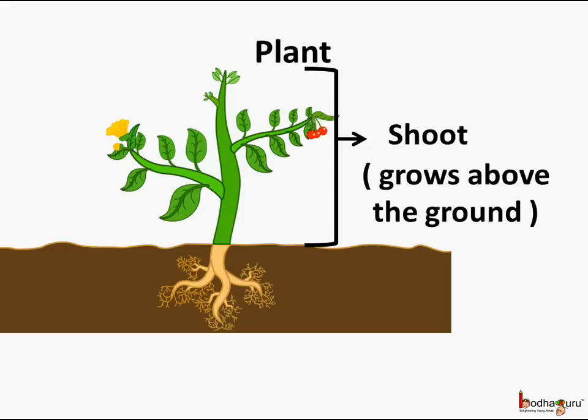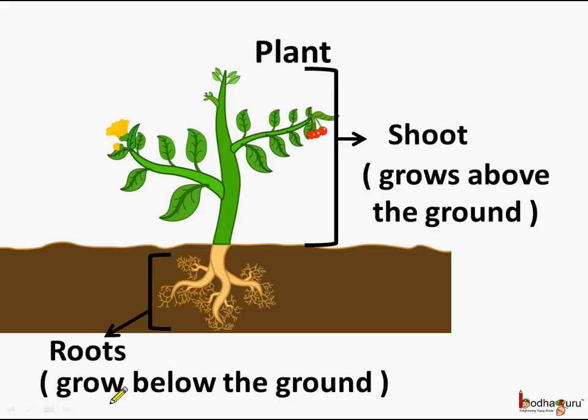The part of the plant which grows below the ground is called roots. The roots grow below the ground and the shoot grows above the ground.